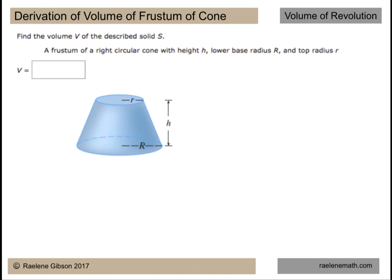Now a frustum of a cone is when you take a big cone and you chop it off and remove a smaller cone like removing this red one. What you're left with is this lampshade kind of object. So we're going to find the volume of that lampshade.